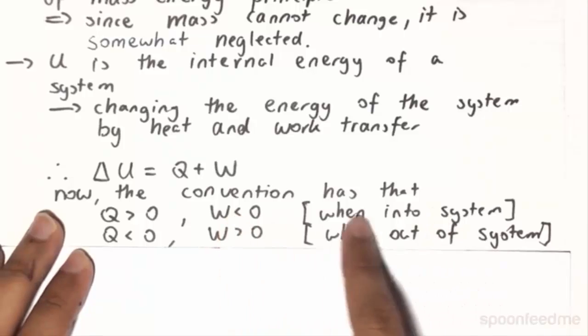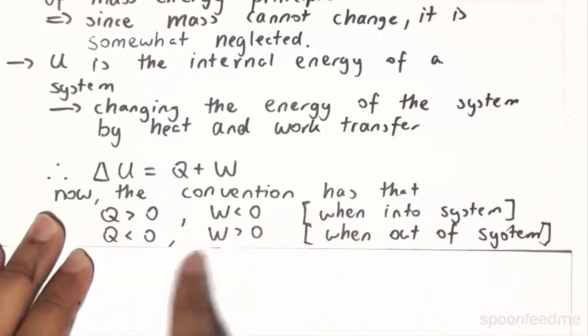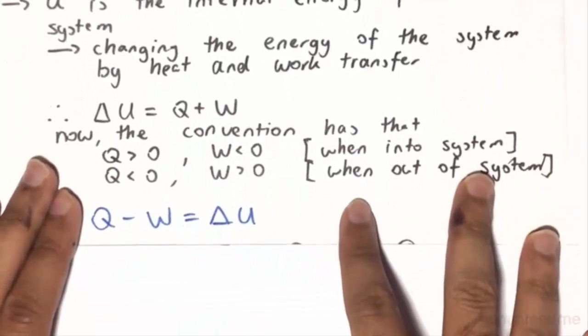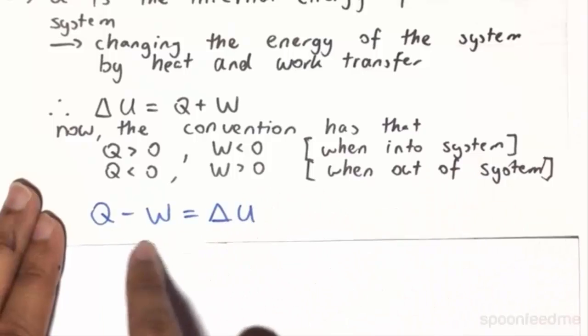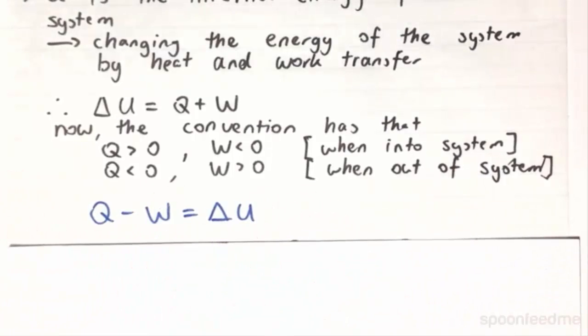inverted for the convention, that is, when it's into the system, the Q is positive but the work is negative, and vice versa, then it makes sense that this should be simplified to be Q minus W in order to maintain the correct signage.